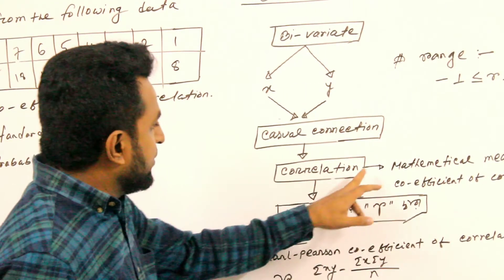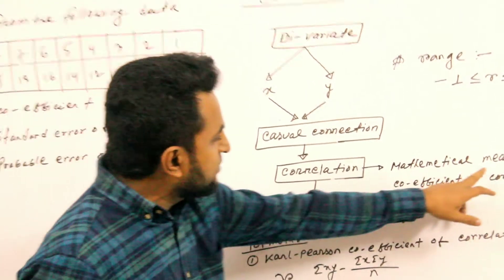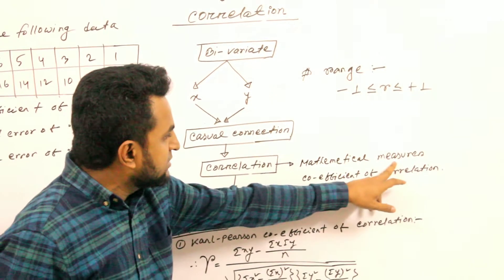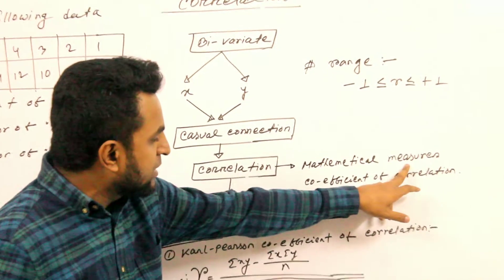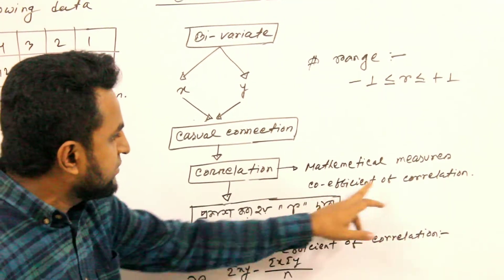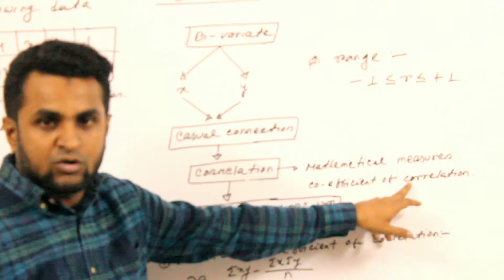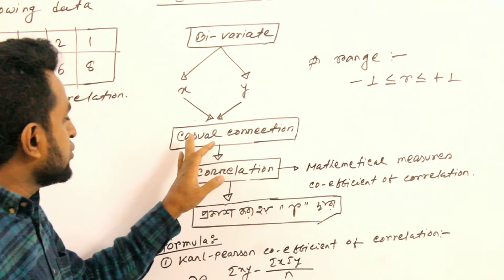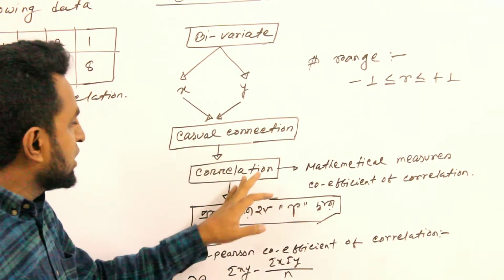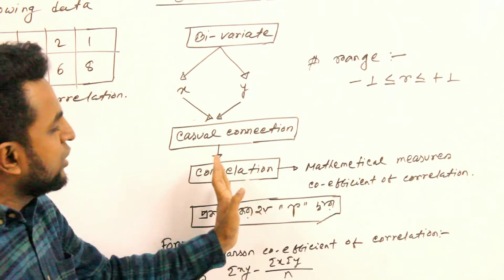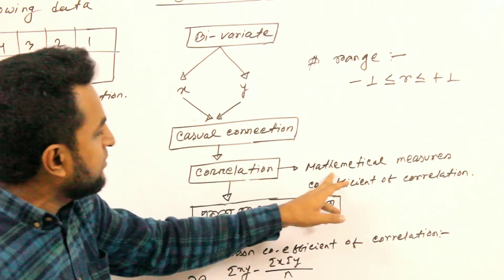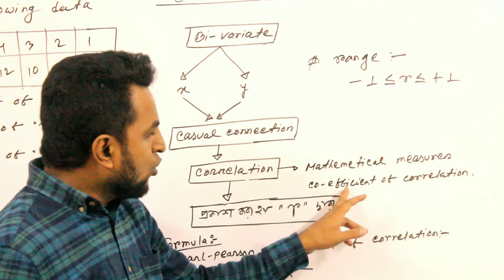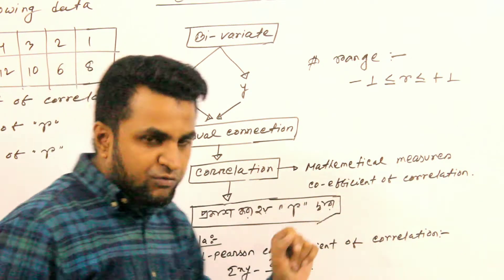There is a correlation — a mathematical measure. That measure is called the coefficient of correlation.